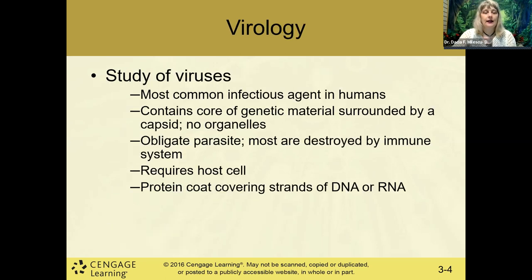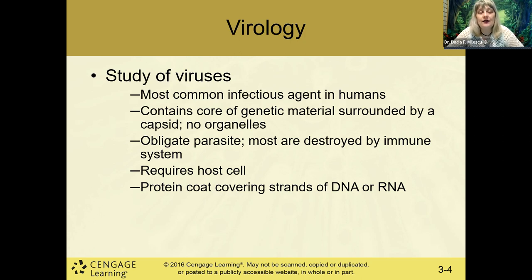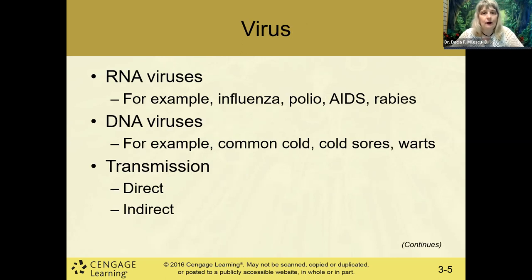With viruses, unlike bacteria, we don't have a vast array of antibiotics. We only have some antiviral agents that can slow down viral replication, but we don't actually have anything to kill a virus other than our own immune system. Therefore we have developed vaccinations designed to boost the immune system in order to fight the viral infection. Viruses can be RNA or DNA — RNA viruses are the most common.